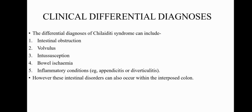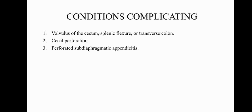The clinical differential diagnosis of Chilaiditi syndrome includes intestinal obstruction, volvulus, intussusception, ischemic bowel, as well as inflammatory conditions such as diverticulitis and appendicitis. However, it must be remembered that these intestinal disorders can also occur within the interposed colon in Chilaiditi syndrome. The conditions complicating Chilaiditi syndrome can include volvulus of the cecum, splenic flexure or transverse colon, cecal perforation, or even perforated diaphragmatic appendicitis.